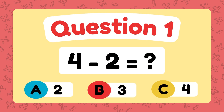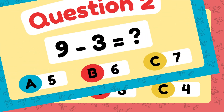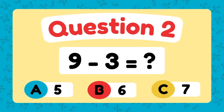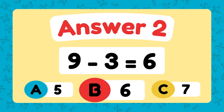What is 4 minus 2? The answer is 2. What is 9 minus 3? The answer is 6.